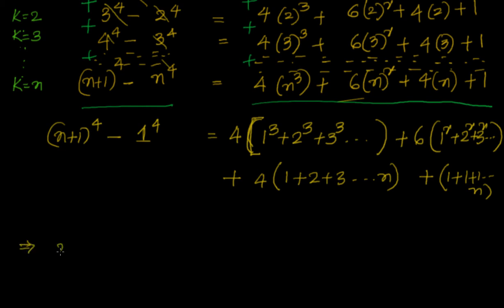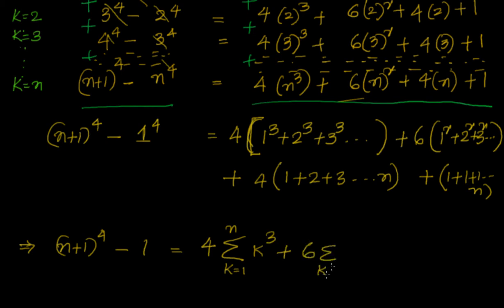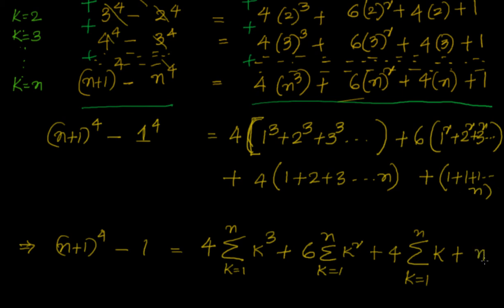Writing this in summation format: n plus 1 whole to the power of 4 minus 1 equals 4 times sigma (k=1 to n) of k cube, plus 6 times sigma (k=1 to n) of k square, plus 4 times sigma (k=1 to n) of k, plus n. Sigma notation means adding the terms — for k equal to 1 to n you get 1 cube plus 2 cube plus 3 cube and so on, which is why we use sigma.